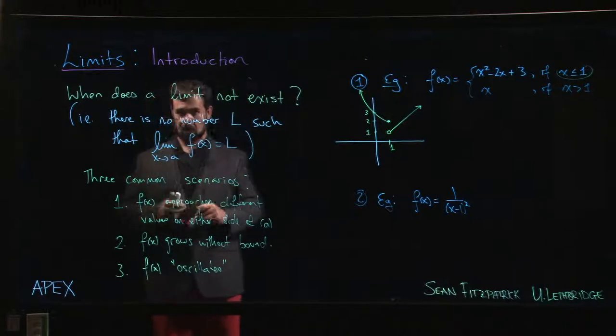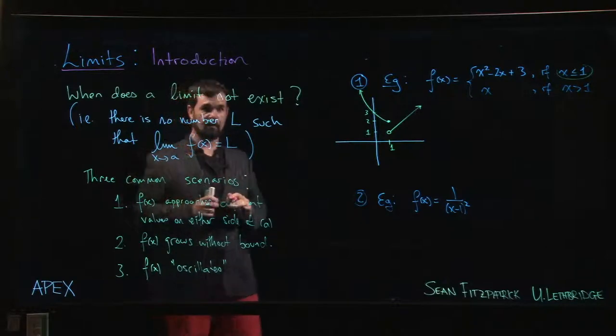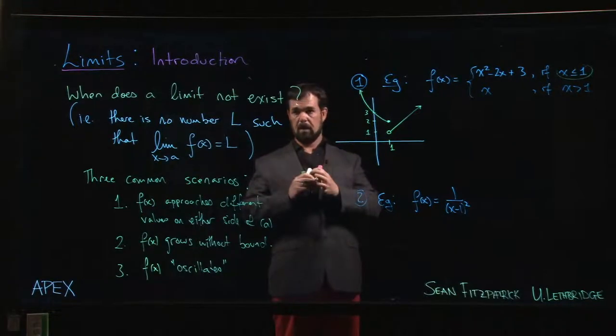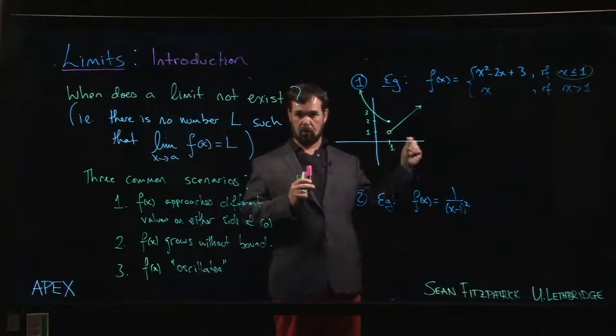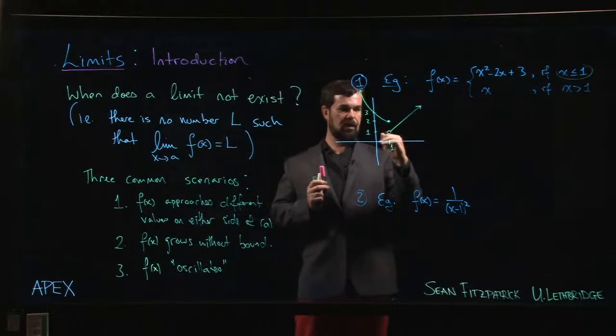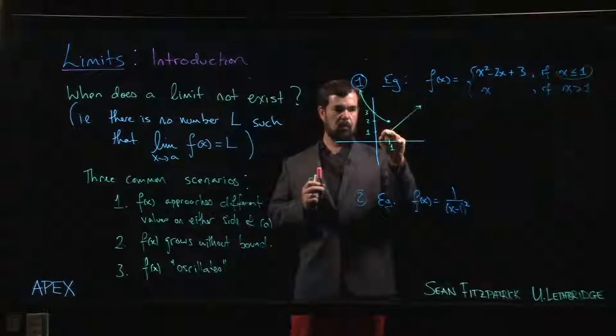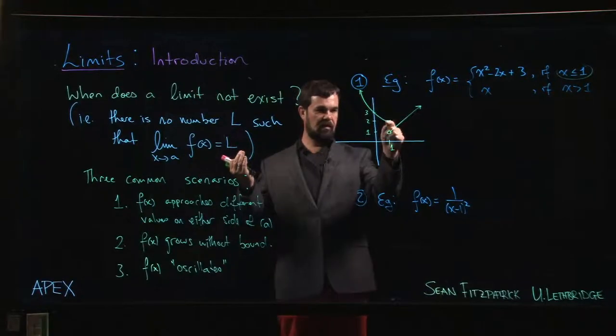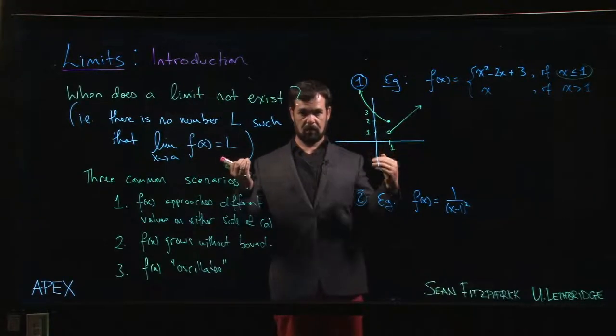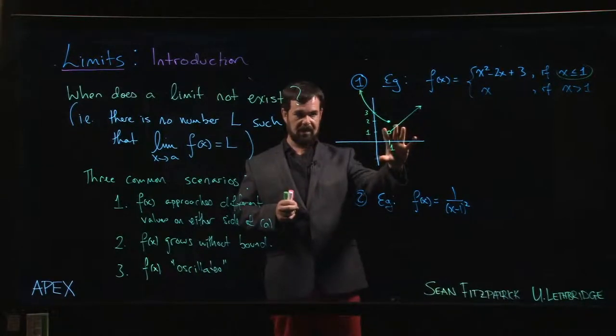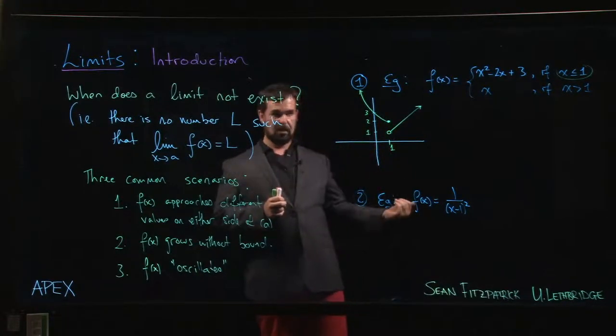You could try to split the difference, go halfway in between, but even then, when we say we can make f of x close to this number L, there's the question of how close. We want to allow for arbitrary precision. A half might not be close enough—we might say I want f of x to be within 0.00001 of L, and there's no way you can do that. There is no number that is within 0.00001 of both 1 and 2. They are a distance of 1 apart. The best you can do is halfway in between, a distance of one half from both. You can't get a distance any smaller than that.